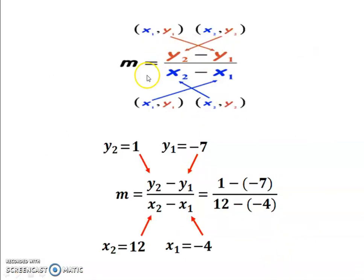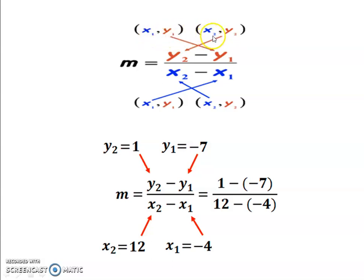Let us check how it is defined. m equal to y2 minus y1 upon x2 minus x1. Always, the first point is considered as (x1, y1) where x and y are variables, and the second point is considered as (x2, y2). Hence, the formula is y2 minus y1 upon x2 minus x1.